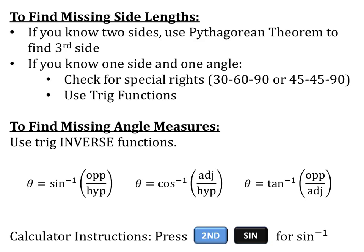If we're trying to solve a right triangle and we need to find some missing sides, we have a few options. Option number one: if we know two of our sides, then we can just use the Pythagorean theorem — A squared plus B squared equals C squared — to find our missing side.